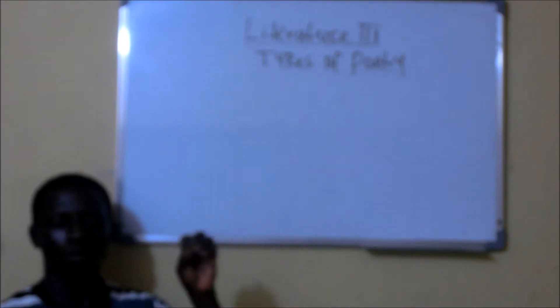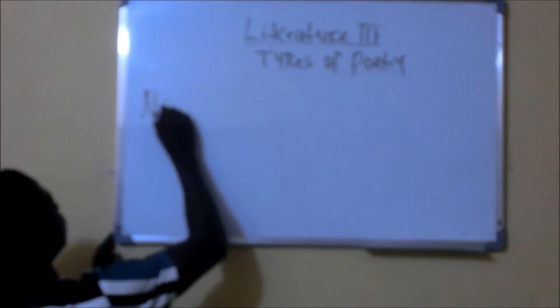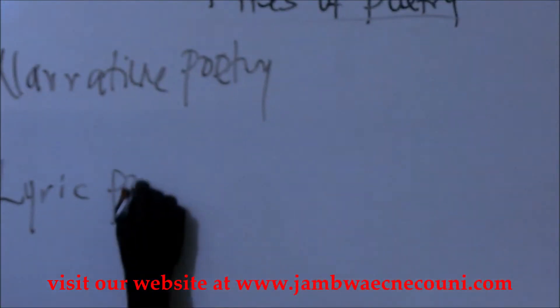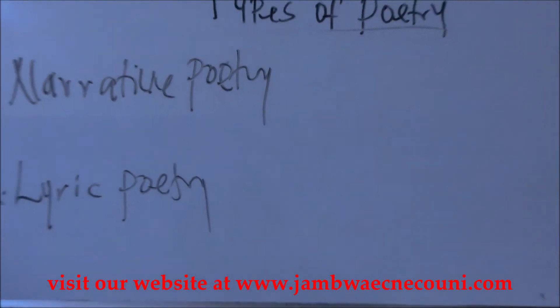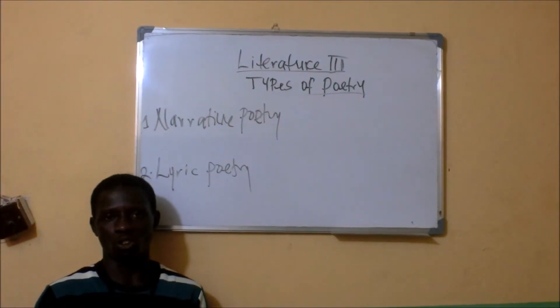Basically, poetry is divided into two categories or two major types. We have what we call narrative poetry — that is one — and then two, we have what we call lyric poetry. So these are the two major types of poetry that we have.